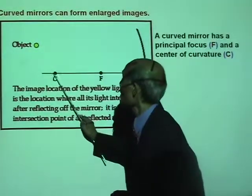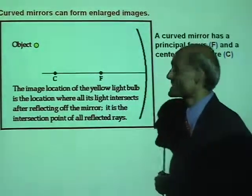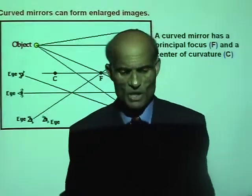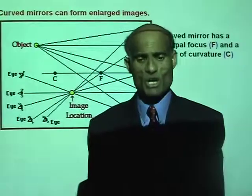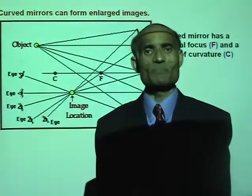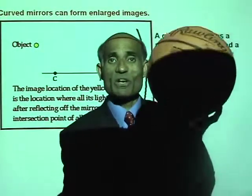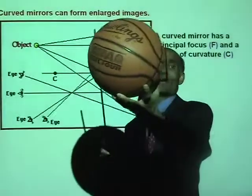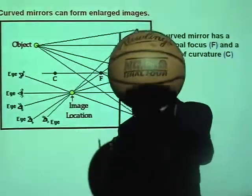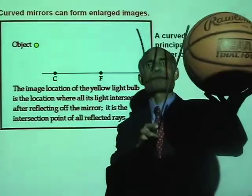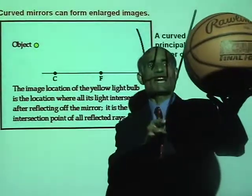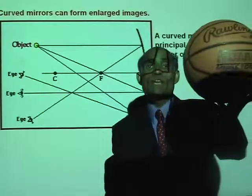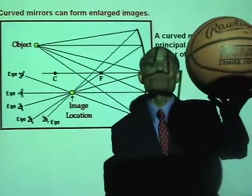Also, the curved mirror has a center of curvature. What is the center of curvature? Here I have a sphere — if I cut a small piece out of this, it will be like a curved mirror. The center of the sphere from which we have cut that curved mirror is called the center of curvature of the mirror.